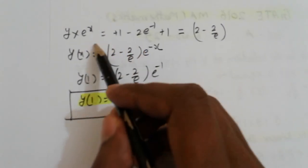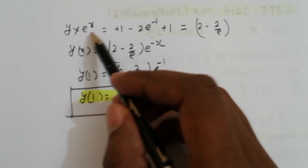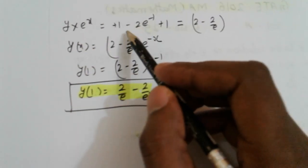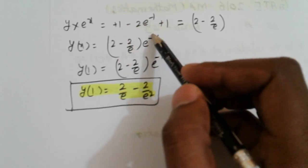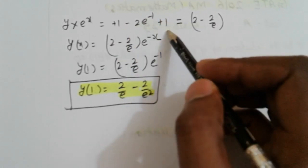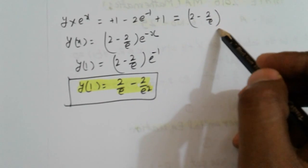Now put and simplify, we get Y into e raised to x on left hand side, integrating factor, equals 2 minus 2 e raised to minus 1.